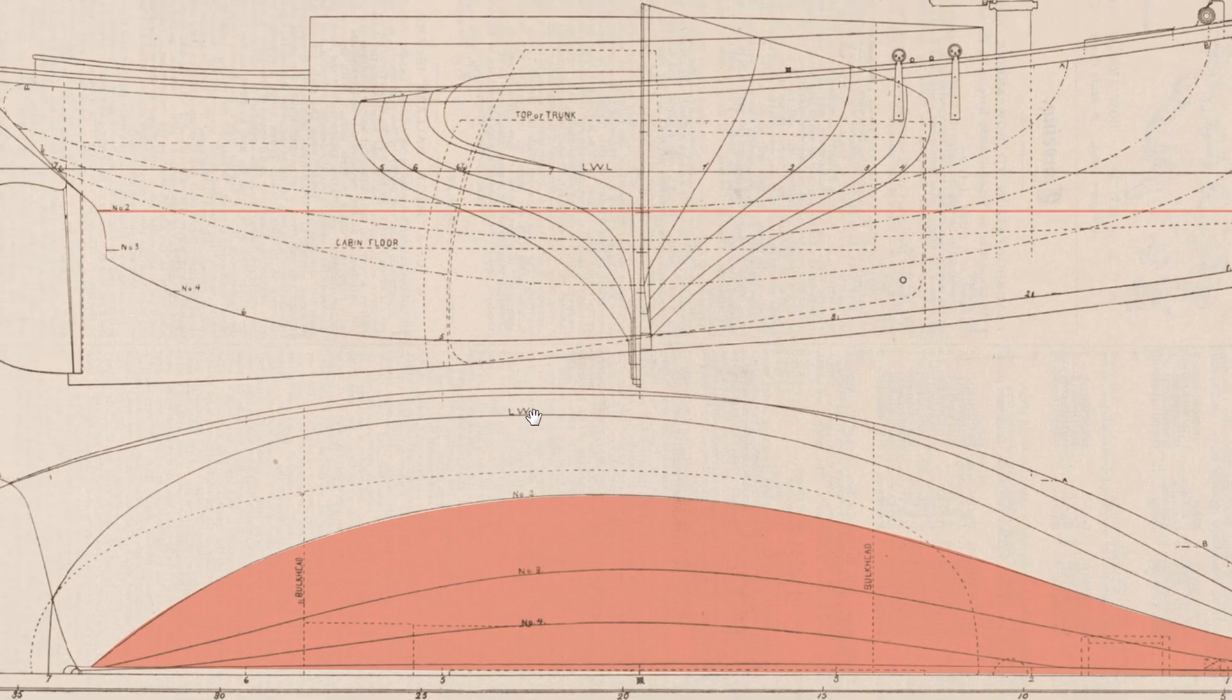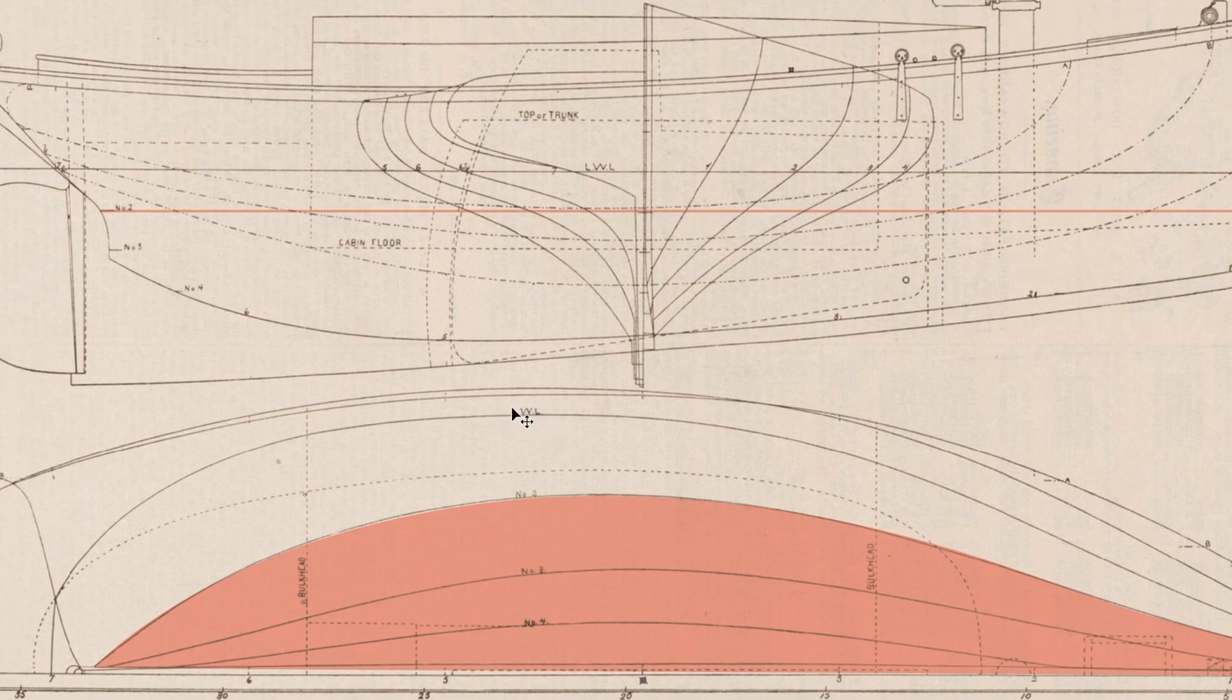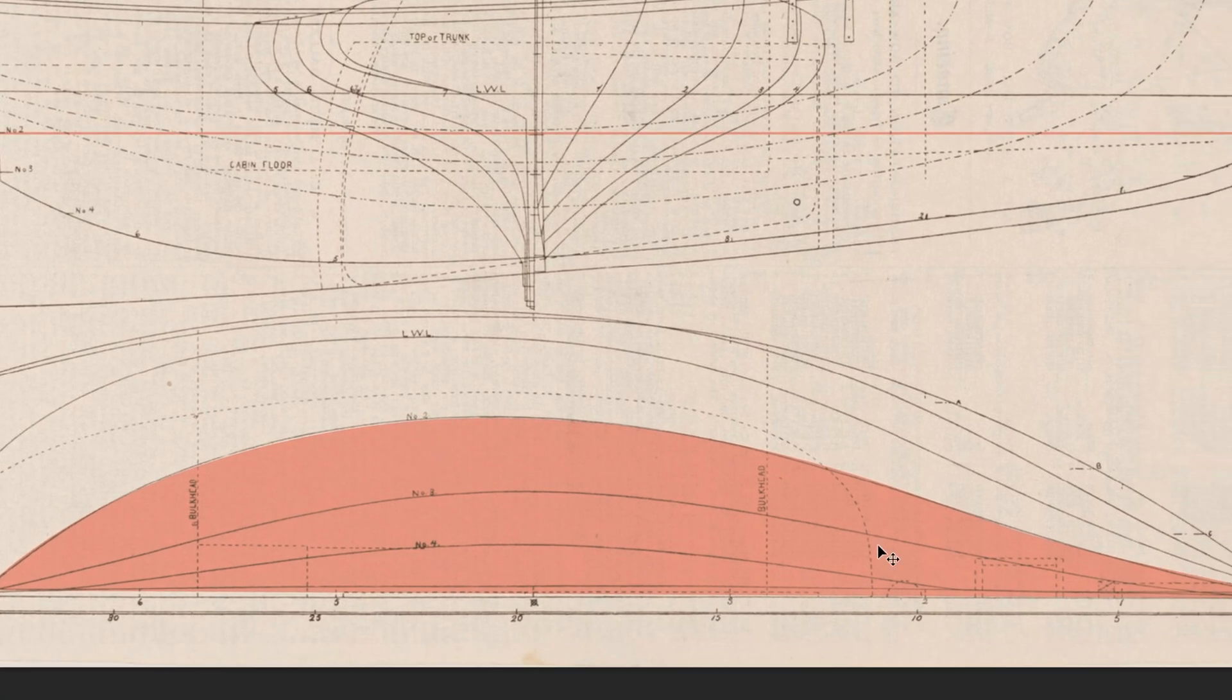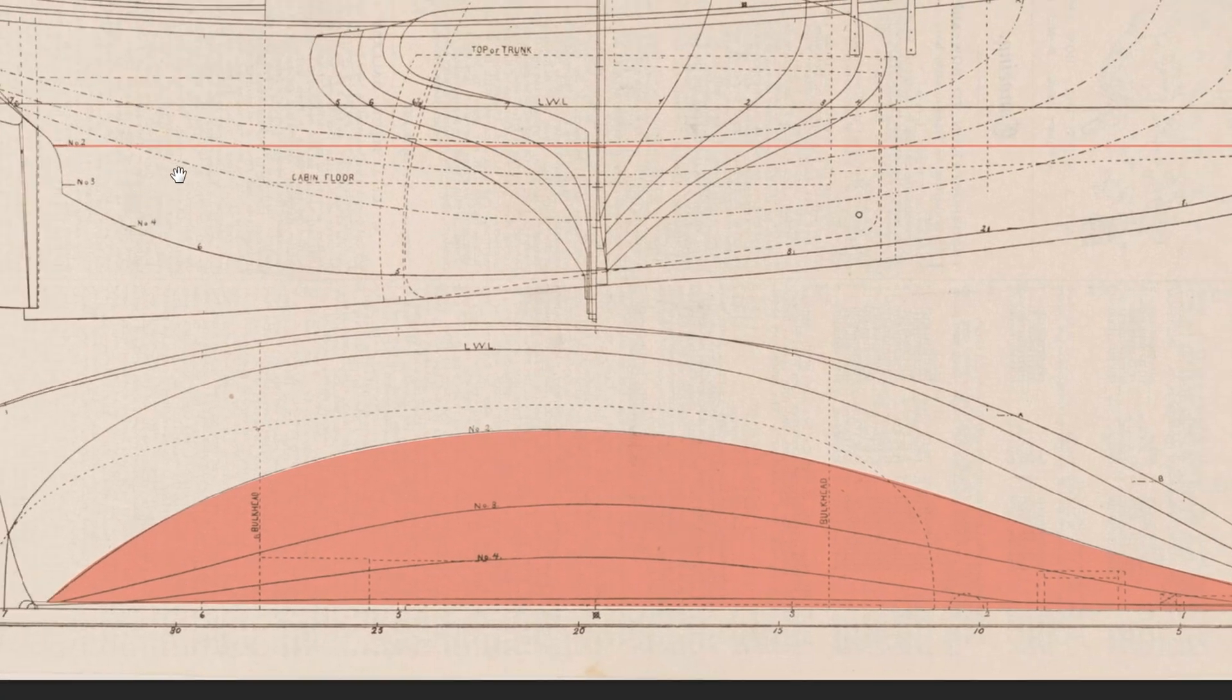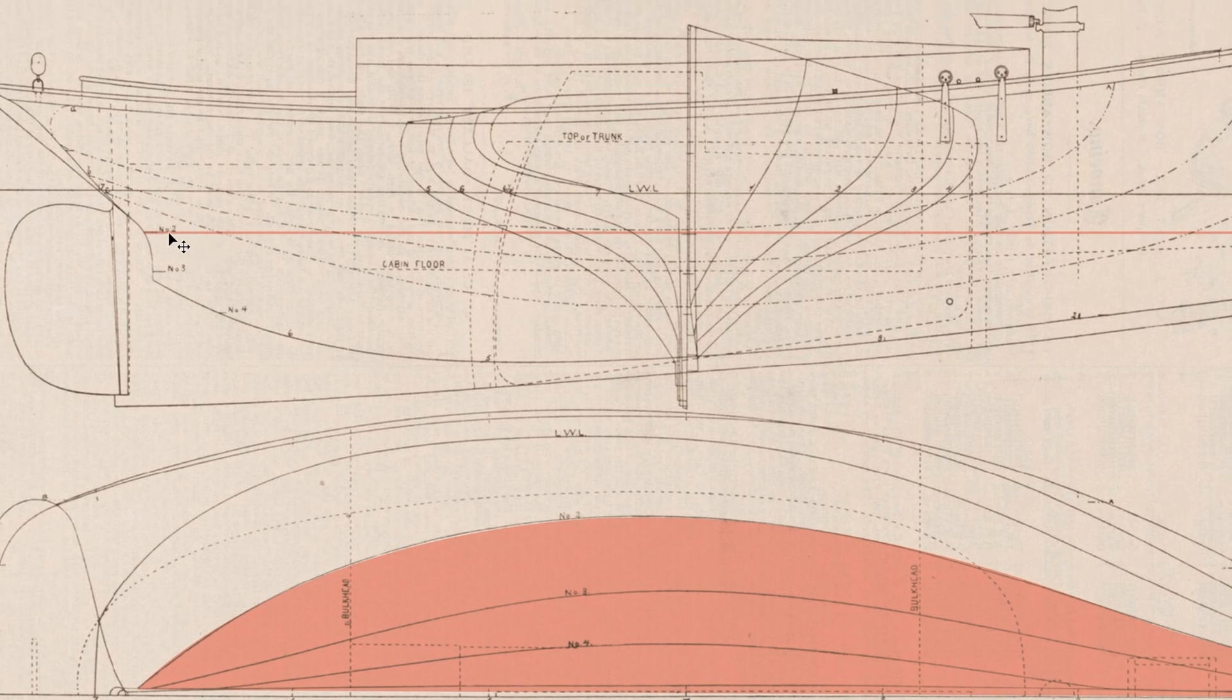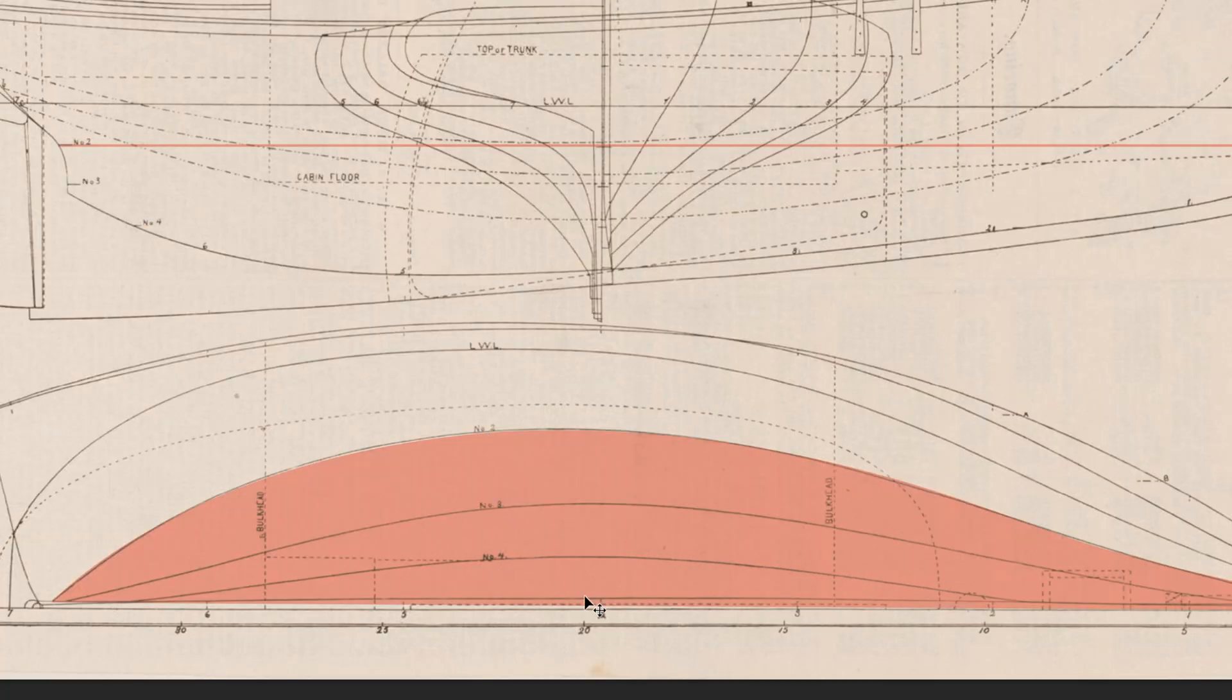So LWL, that's got to stand for like waterline, maybe level waterline when it's sitting level in the water, not keeled over. There's number two here. So this profile right here is a slice corresponding at this height through the hull. So number two, so we have two, three, four, and two, three, four right here.